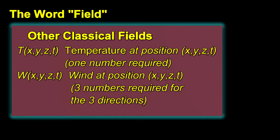To describe the wind, you need three numbers at every point in space and time. Temperature requires one number for every point. The electric field requires three numbers, and so does the magnetic field.